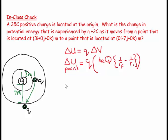So ΔU_point equals little q, which is +2, times K_E times big Q, which is +35, times (1/r_f). You end up 7 meters away, so 1/7, minus you started off only 3 meters away, so 1/3.